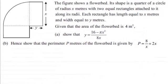Hi, now in this example we're given that this figure here shows a flowerbed. Its shape is a quarter of a circle of radius x meters with two equal rectangles attached to it along its radii.